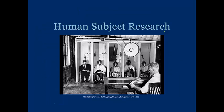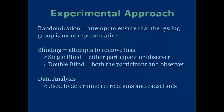For most medical research, there is a human subject research portion with human test subjects. When it comes to the experimental approach, you have to make sure that there is randomization, some form of blinding, and proper data analysis. Randomization attempts to ensure that the test group is more representative. It also keeps researchers from picking subjects based on what they would prefer, thus eliminating individual biases.